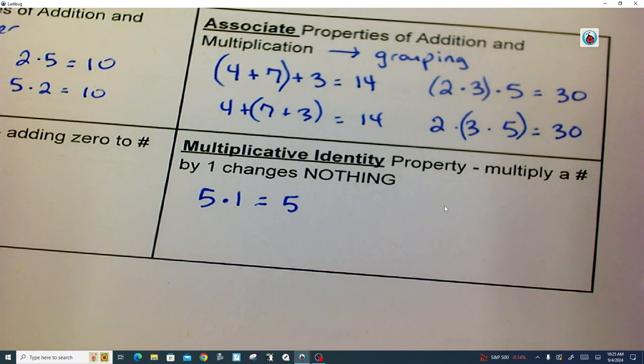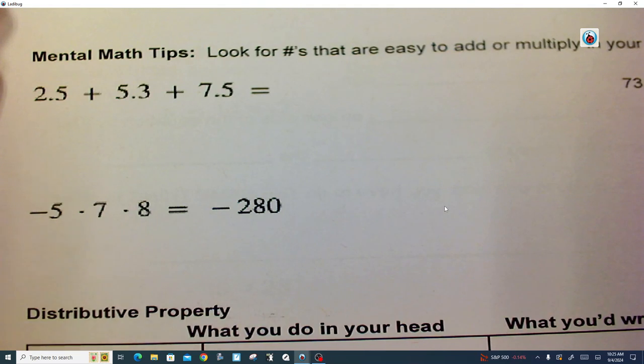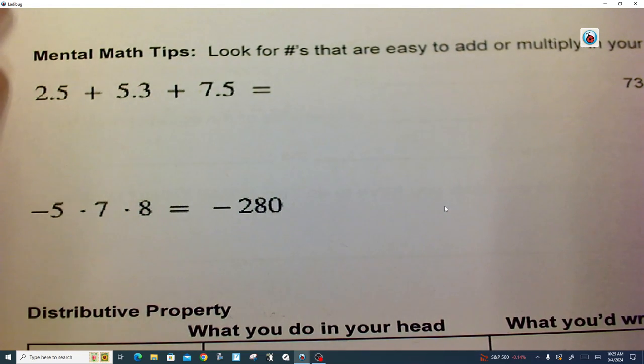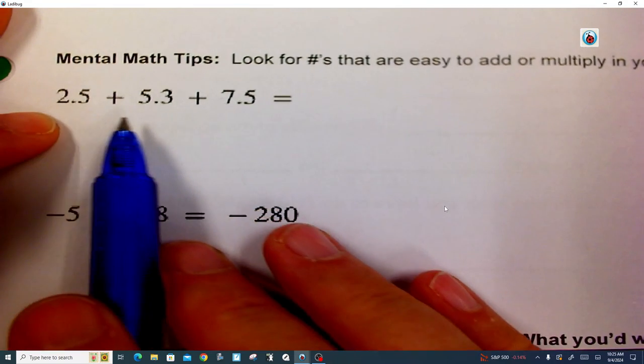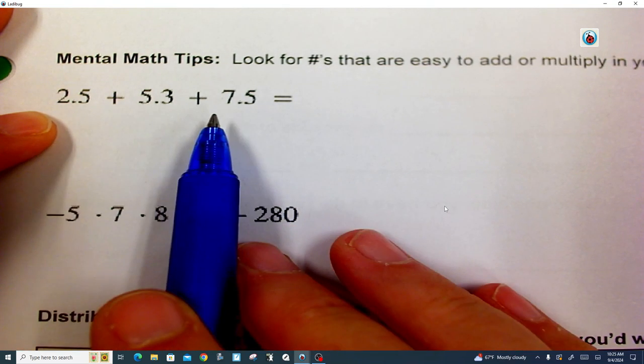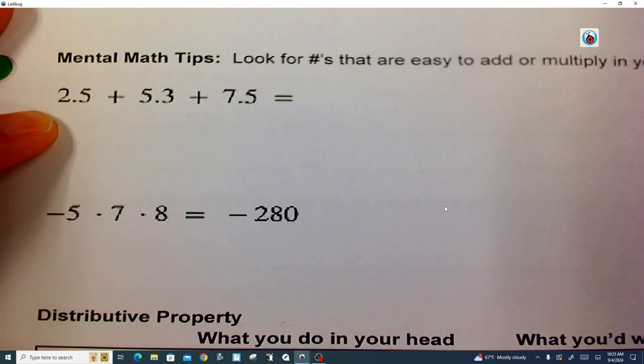The next one that we're going to look at is the distributive property and that is the one that you guys will definitely need. Before we get to the distributive property, let's go look at mental math here. Now you can add these up any way that you want. It's the commutative property. It just depends which ones that you go. And this is at the top of page 7.